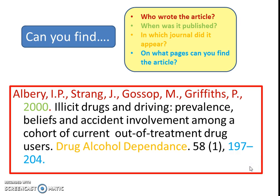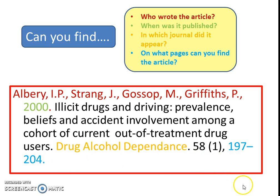So when we look here again, we can see who wrote the article — we've got our authors — when it was published, the year 2000, what journal: Drug Alcohol Dependence, and the pages 197 to 204. It always appears in this order. It's a set order — everybody knows it, everybody uses it.